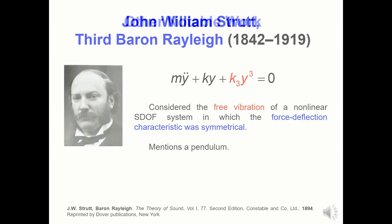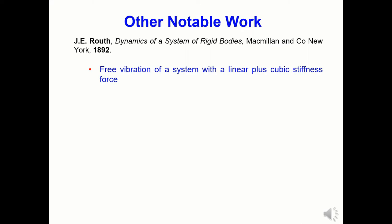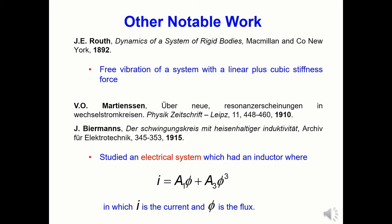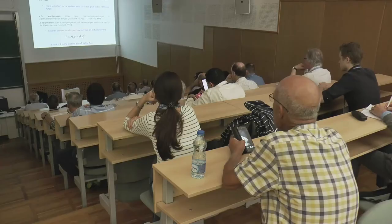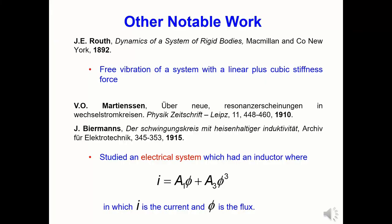Before turning specifically to George Duffing, it is worth mentioning some closely related work carried out prior to the publication of his book. The first is Routh's book, in which a system similar to that described by Rayleigh was analysed. A few years later, Martiansen and Beermans described the nonlinear relationship between the current and flux in an inductor in terms of a linear and a cubic term.